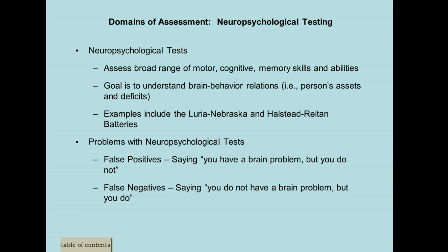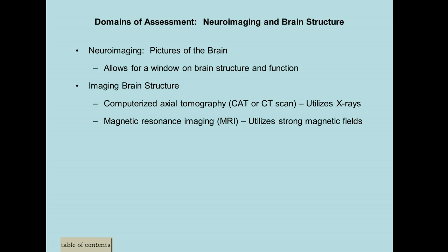There are also neuropsychological tests, like the Luria-Nebraska and the Halstead-Reitan. You want to give those if you suspect any sort of brain damage — to determine the extent of the damage and where the damage occurred. Sometimes you run into problems with false positives and false negatives with neuropsych tests, so you really have to know what you're doing.